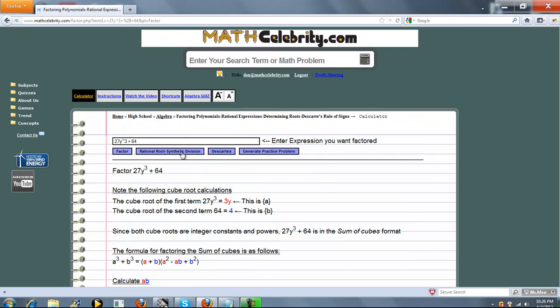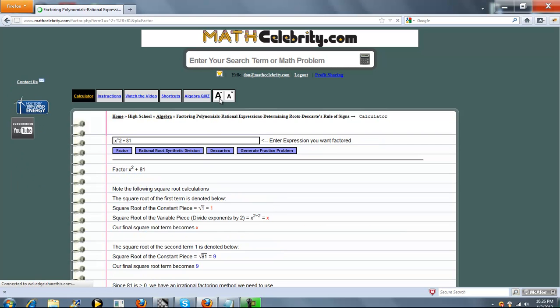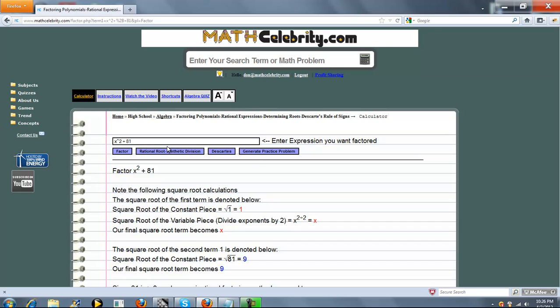Now, a couple of you have asked about irrational roots. So let's go ahead and do x squared plus 81. At the beginning of the lesson we did minus, now let's do plus. So here's what's going to happen. Actually, let's do one with a coefficient that has a square: 100x squared plus 81.